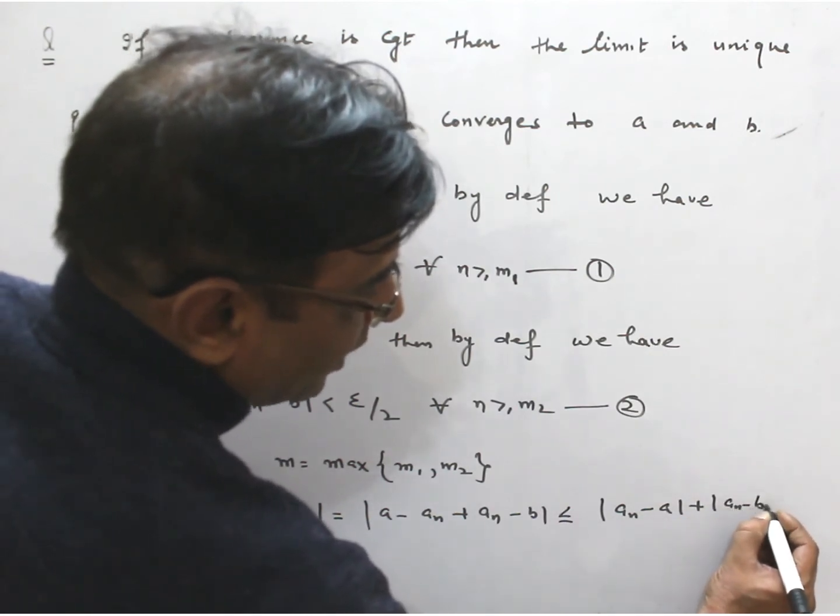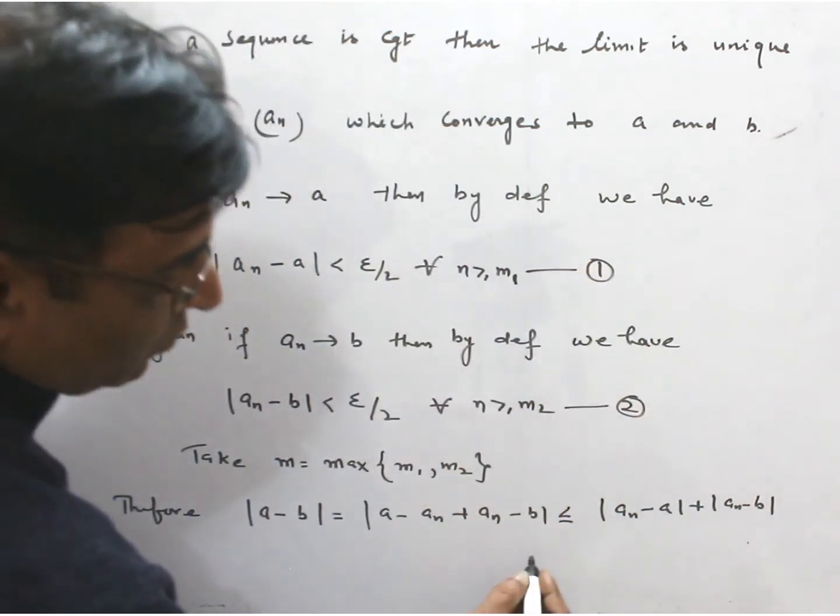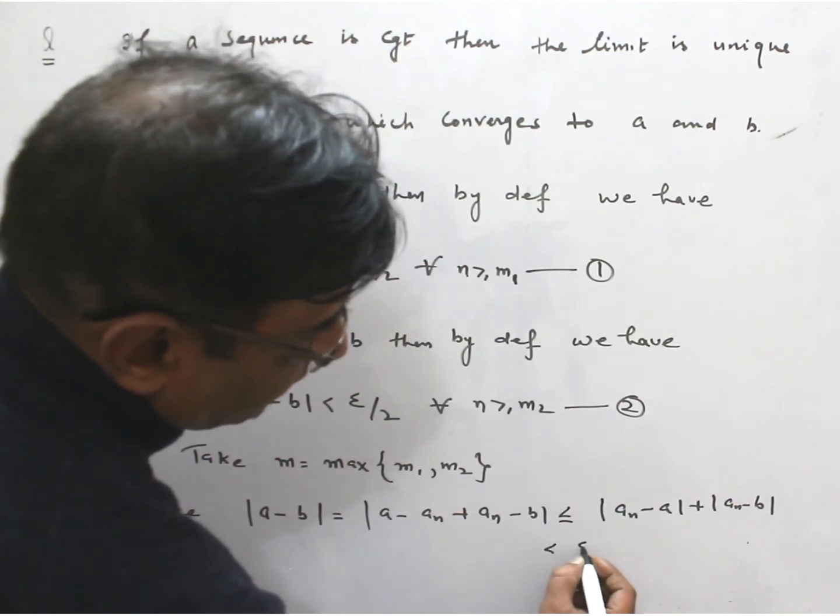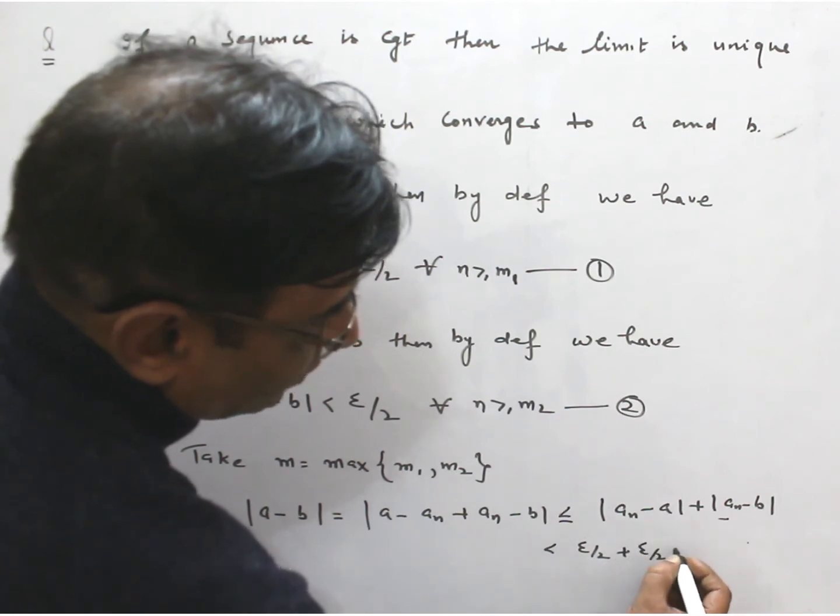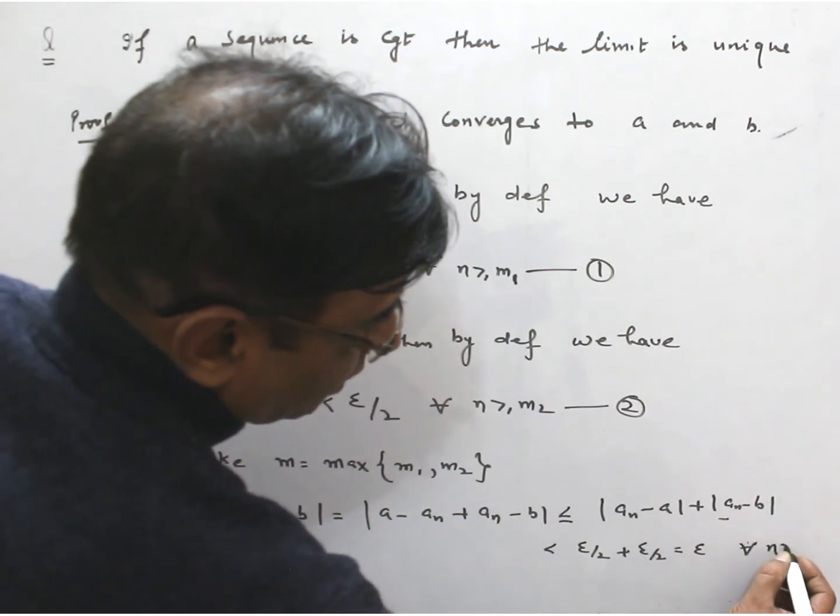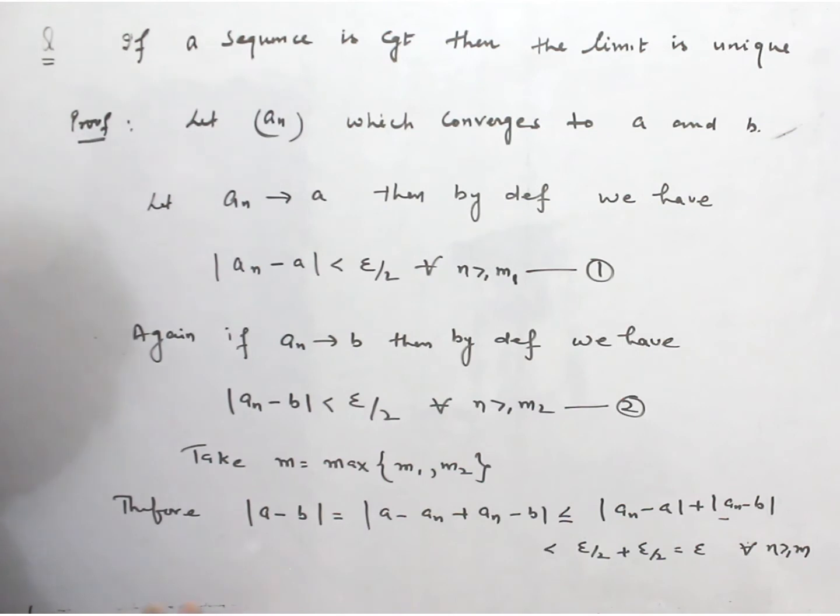Now using equations 1 and 2, this is less than ε/2 + ε/2, which equals ε for all n greater than m.